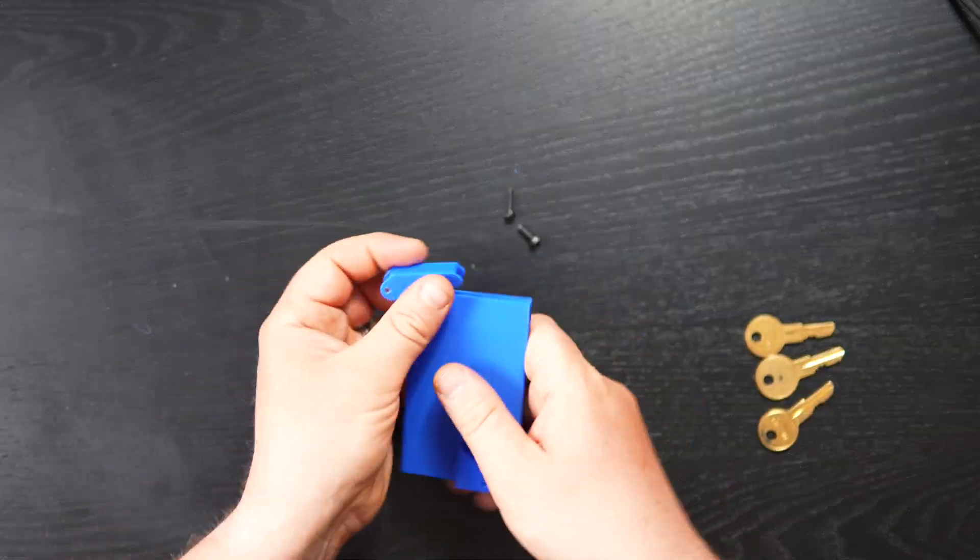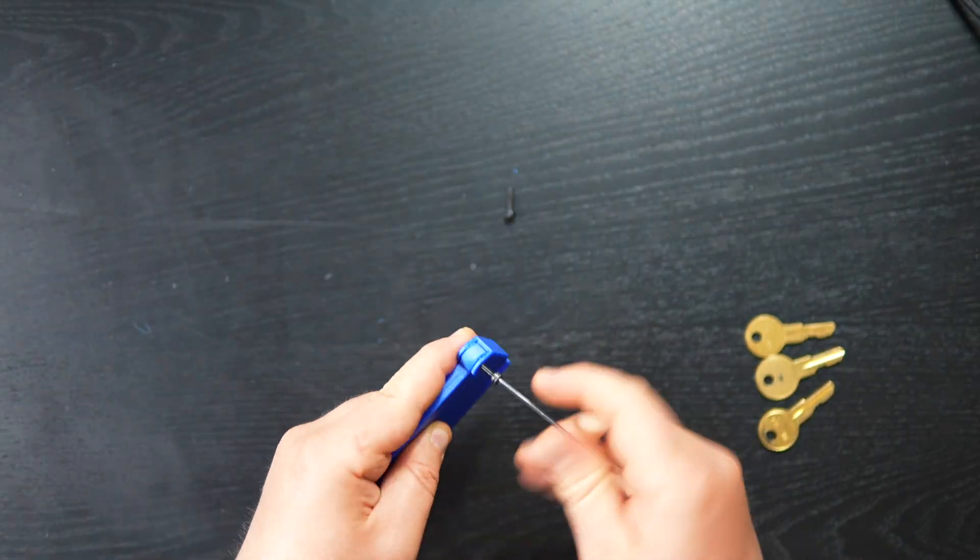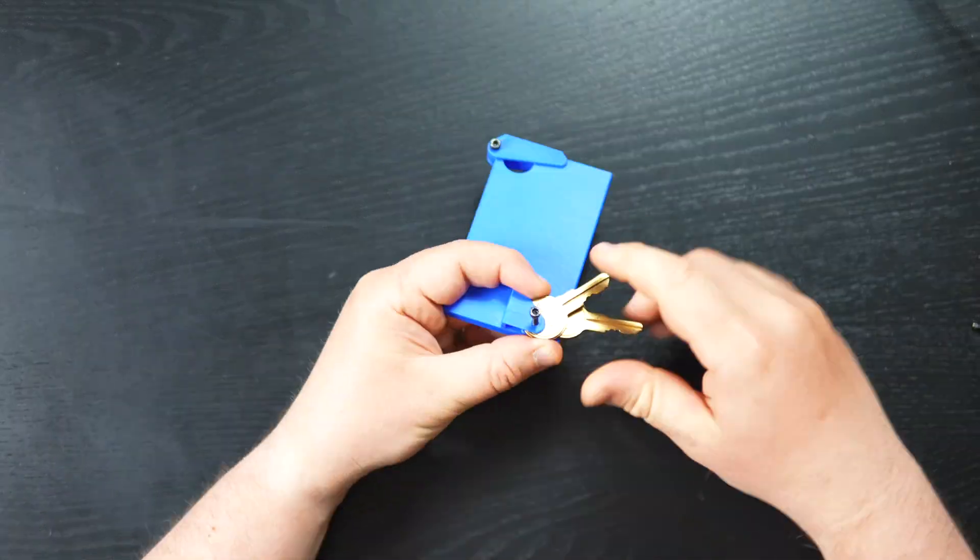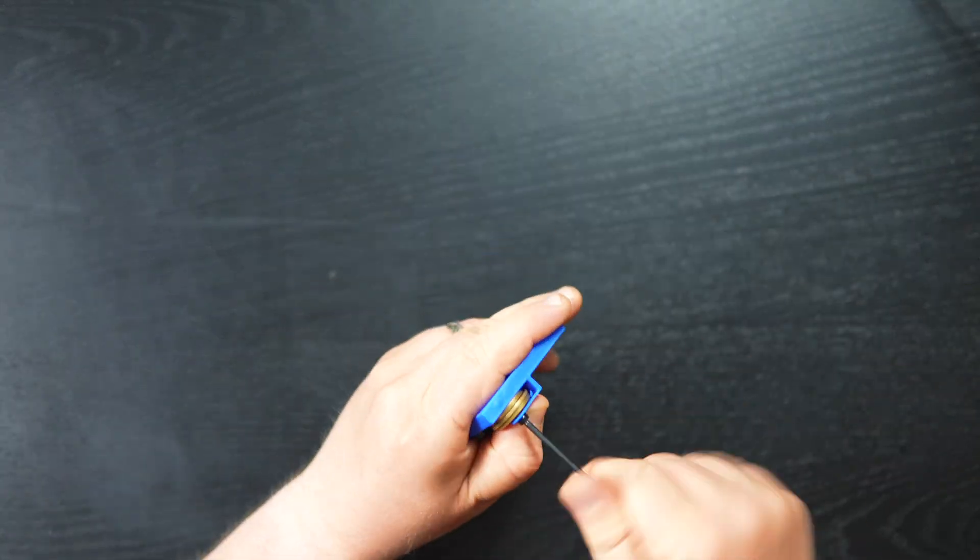Finally, the third version uses two screws. Insert the cover and secure it. Add a few keys and screw them in firmly. Never lose them again.